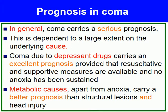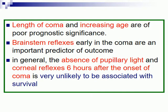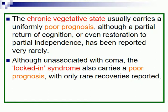Prognosis in coma: in general, coma carries a serious prognosis dependent largely on the underlying cause. Coma due to drug depression carries an excellent prognosis provided resuscitative and supportive measures are available and no anoxia has been sustained. Metabolic causes, apart from anoxia, carry a better prognosis than structural lesions and head injury. Length of coma and increasing age are of prognostic significance. Brainstem reflexes early in the coma are an important predictor of outcome. In general, the absence of pupillary light and corneal reflexes during the six hours after the onset of coma is very unlikely to be associated with survival. Chronic vegetative state usually carries a uniformly poor prognosis, although partial return of cognition or even restoration to partial independence can very rarely be reported.